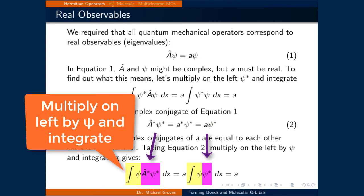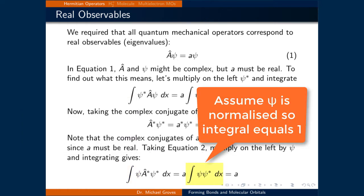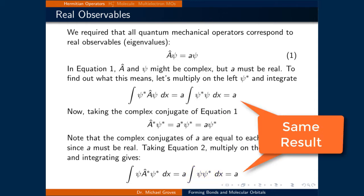If we take this equation and multiply on the right by psi and integrate, we get the integral of psi times the complex conjugate of the A operator applied to psi* dx, equal to A times the integral of psi times psi* dx. Assuming psi is normalized, that integral equals 1, just leaving A. So the results of these two processes are the same.